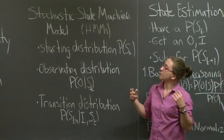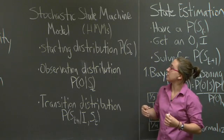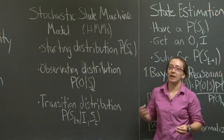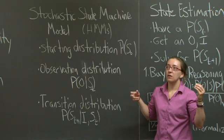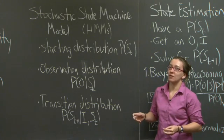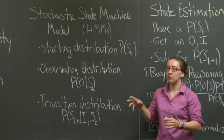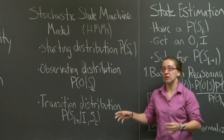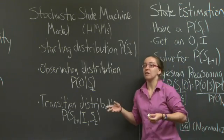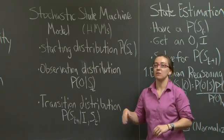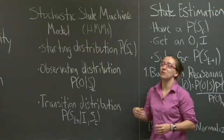State estimation is a process that's completed as a consequence of wanting to understand a stochastic state machine. State estimation itself is not a stochastic state machine. State estimation attempts to take a stochastic state machine, make a model of that stochastic state machine, and then run state estimation on it iteratively to attempt to figure out the current state.